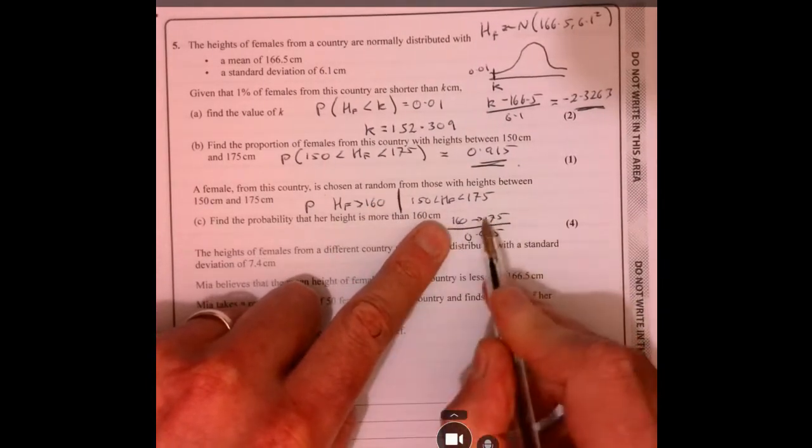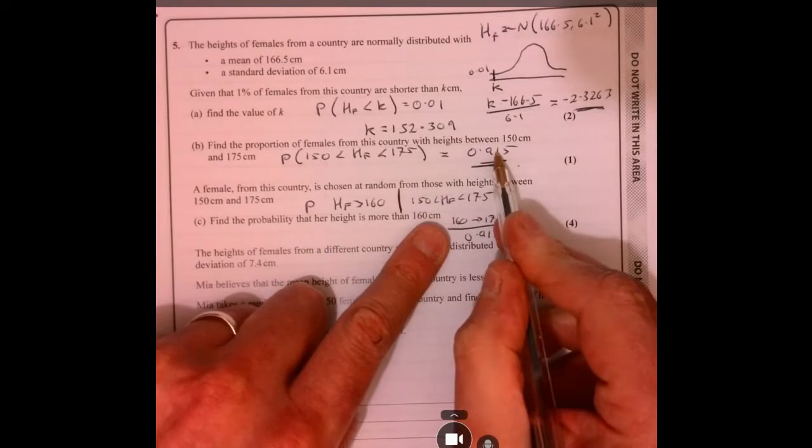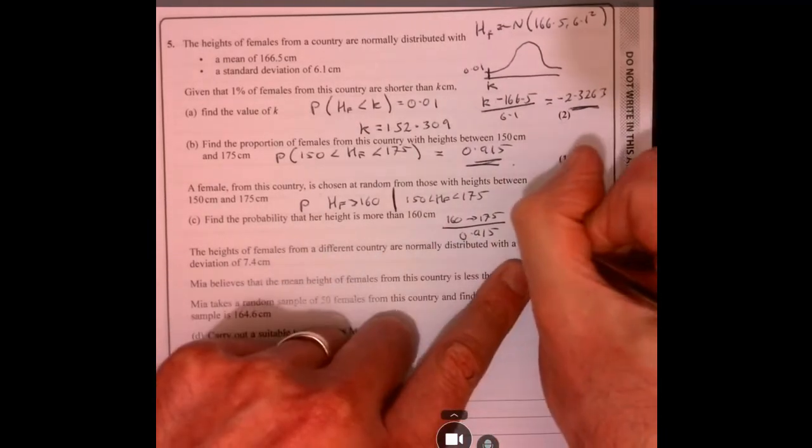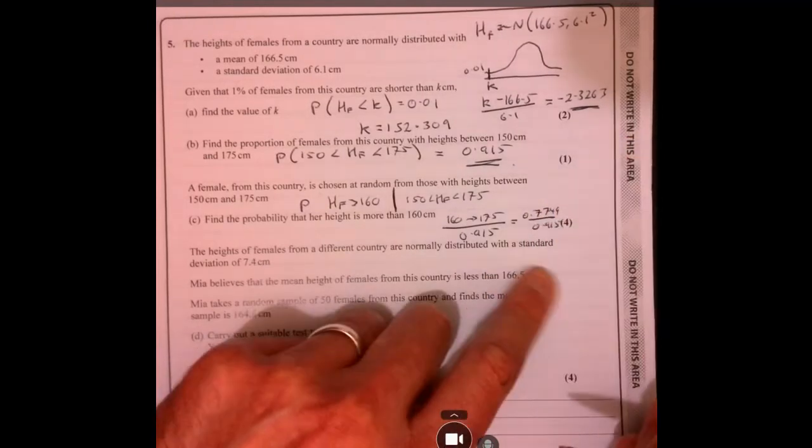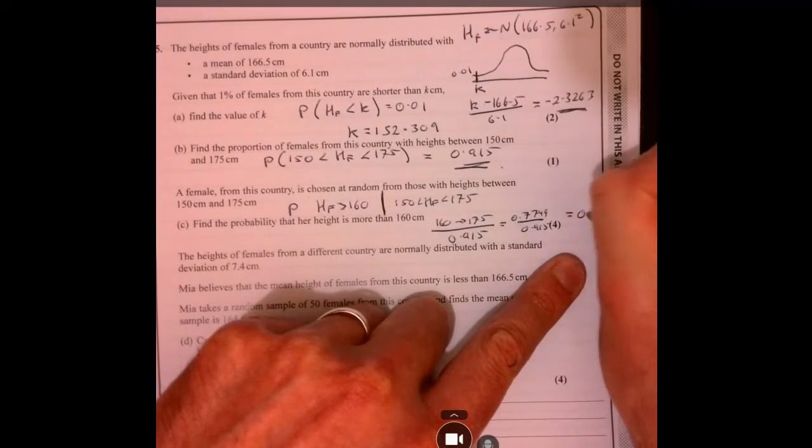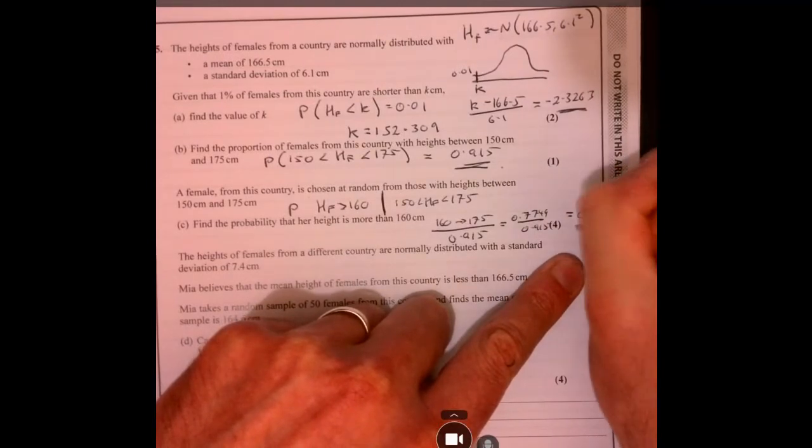I'm going to work that out in exactly the same way as we did up here. So that'll give me 0.7749 divided by 0.915, which is 0.515, and that equals 847 just there.